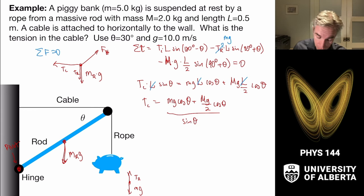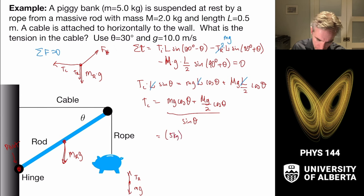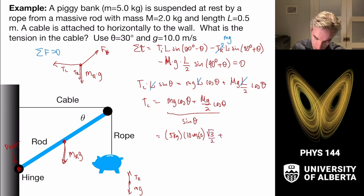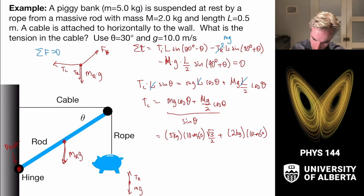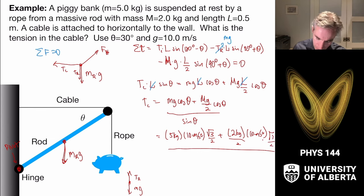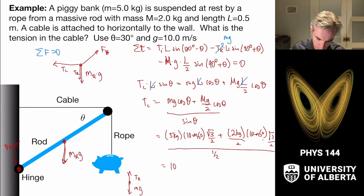Plugging in numbers: m = 5 kg, g = 10 m/s², cos 30° = √3/2, M = 2 kg (rod mass), and sin 30° = 1/2. The result is T_C = 104 newtons.